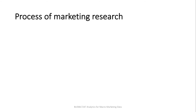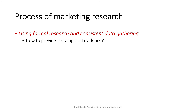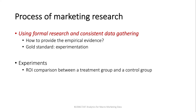So far, we've reviewed the goal of marketing research, which is to provide empirical evidence that supports decision-making. How to provide the empirical evidence? By using formal research and consistent data gathering. There are various research questions in various environments and situations, and researchers have developed research methods to address them. But in most cases, the gold standard is experimentation like the A-B test example. Analysis through an experiment in marketing involves evaluations of ROI or determinants of ROI, such as the conversion rate in the A-B test example. The key to running an experiment is to set up a control group.